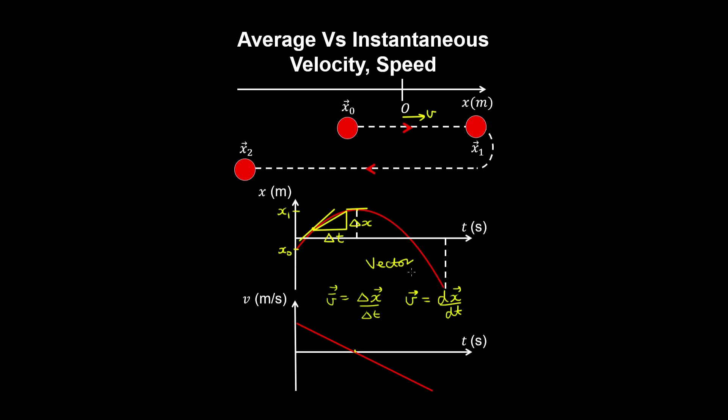And from x1 to x2, the slope of the tangent to the curve is negative, meaning that the velocity is negative and the particle is traveling to the left. Now another quantity to define is speed.